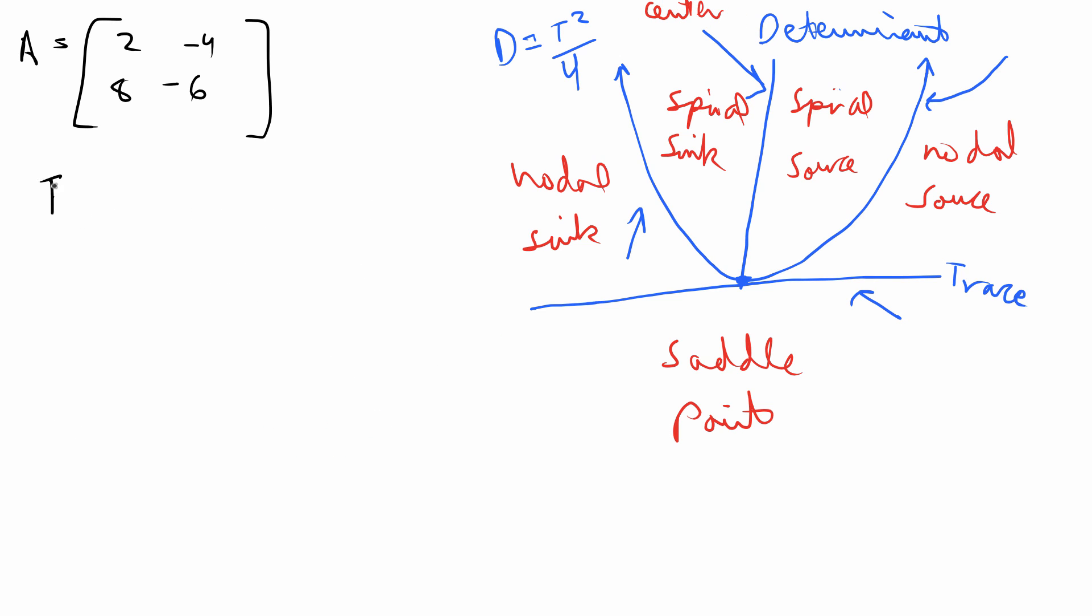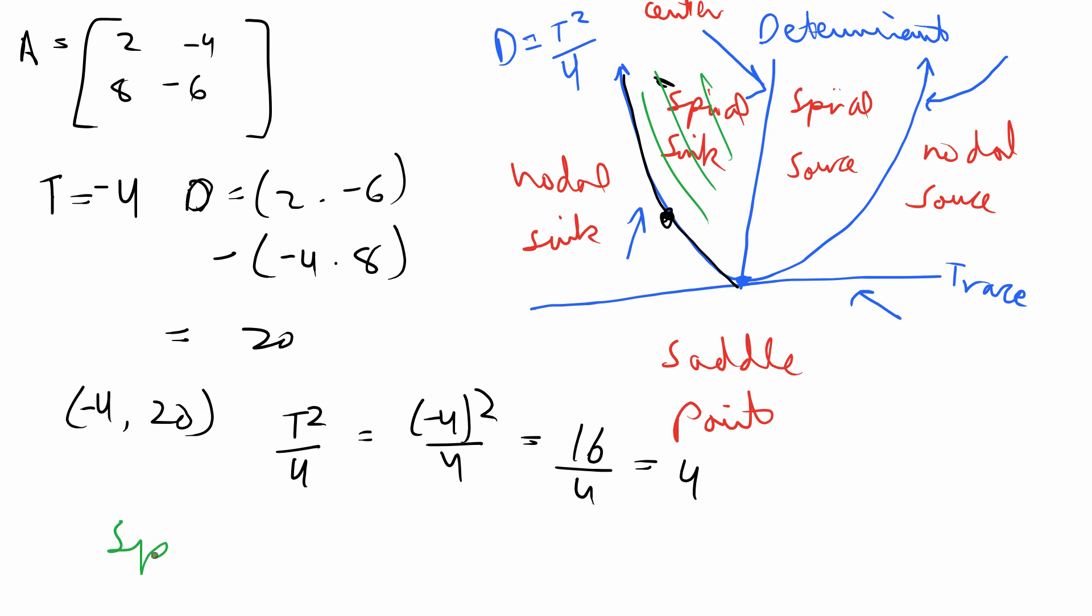And this is the last problem I have. So the trace for this is negative 4 and the determinant is 2 times negative 6 minus negative 4 times 8, which is 20. And so we have the point negative 4, 20. So that's going to be on the left hand side again. And again, we have to determine t squared divided by 4. So that's going to be negative 4 squared divided by 4. So this is 16 divided by 4, which is equal to 4. So this value will be 4 when t is negative 4. Let's say that's over here. So 20 is way above 4. So we are in the spiral sink zone. So this is a spiral sink.